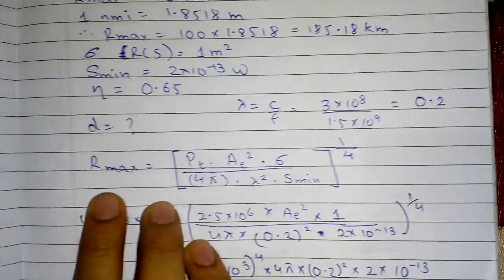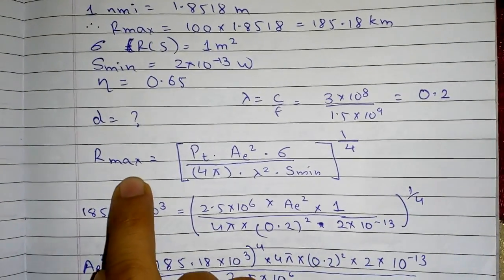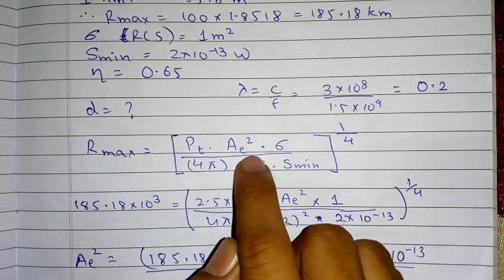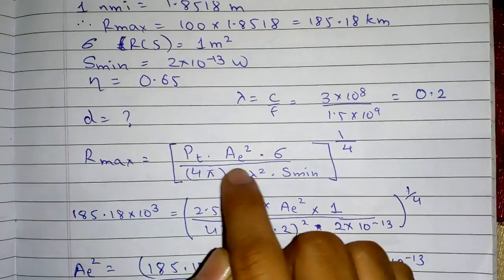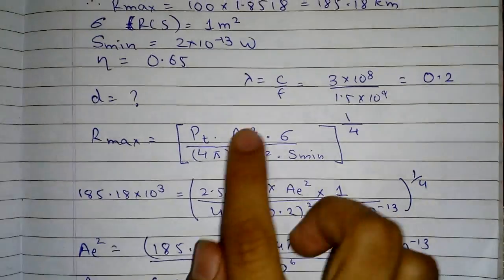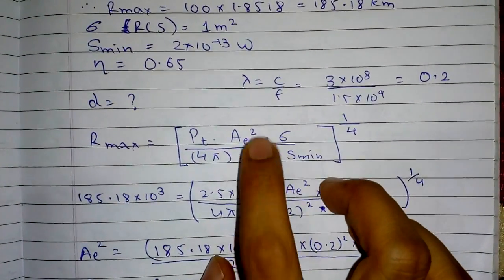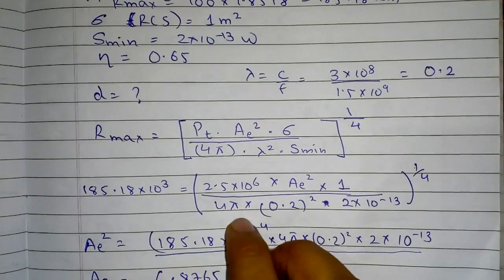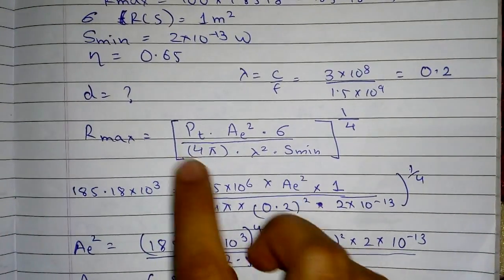We are going to use this. Next we have to write the formula for Rmax. So Rmax equals the fourth root of PT times AE squared times Sigma divided by 4π lambda squared times Smin. Now we don't have this AE squared so we are going to calculate it and then find diameter.